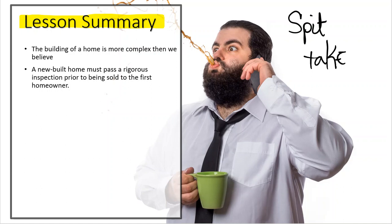All of these things you would need to understand. Don't forget, we have this thing called the CO, because each house must pass a rigorous inspection before it can go from the builder to the first homeowner, and they use this thing called a certificate of occupancy.